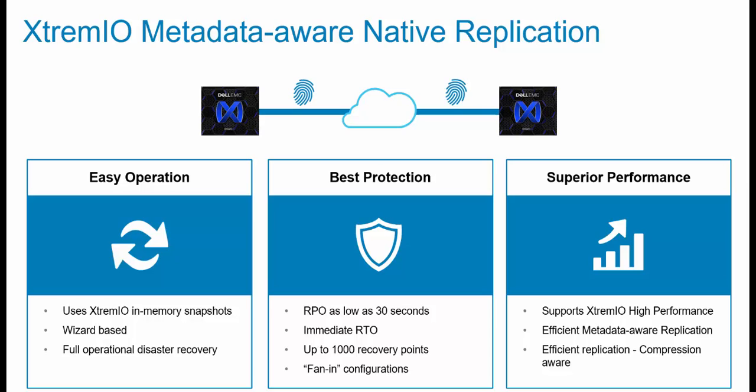If a typical data reduction ratio is 4 to 1, the savings on the cluster and on the wire is 75%. Because of XtremeIO's content-aware architecture, the efficiency is even more. In the demo, we will see how to create a replication session, how to test a copy at the DR site, and how to perform a failover. The GUI is still in design and not final, but it gives a good understanding of the capabilities and simplicity.